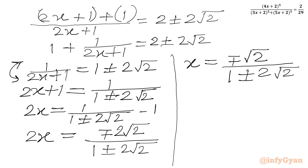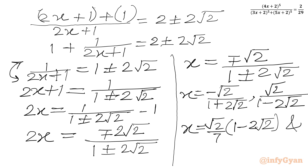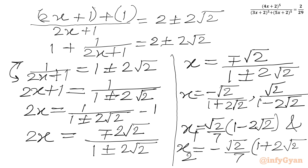Now I will rationalize our denominator to get our final answer. We have two solutions: x equals minus square root 2 over (1 plus 2 square root 2), and x equals plus square root 2 over (1 minus 2 square root 2). After rationalizing the denominator, the final answers are x equals square root 2 over 7 times (1 minus 2 square root 2), and x equals minus square root 2 over 7 times (1 plus 2 square root 2). These are our 2 real solutions.